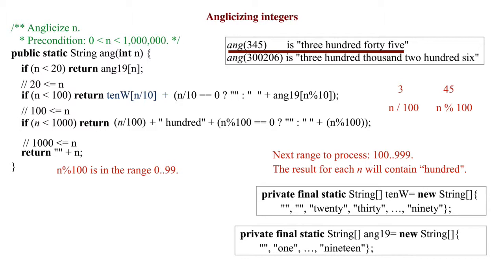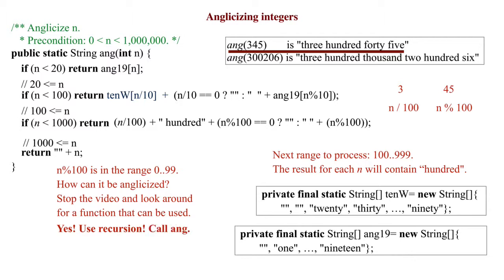The value of n remainder 100 is in the range 0 through 99. How are we going to anglicize it? Stop the video and look for a function that can be used. Yes. To anglicize n remainder 100, use a recursive call on the function being written, ang. Recursion is the natural tool to use here.